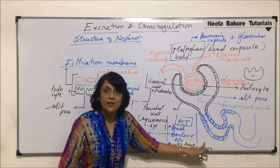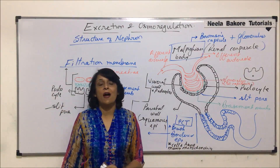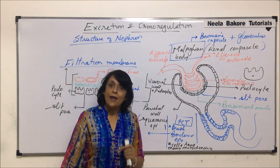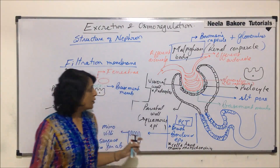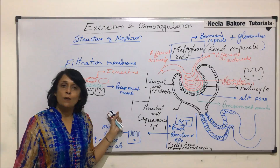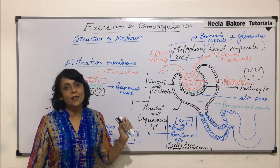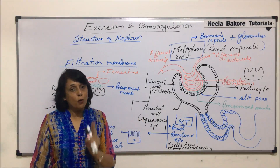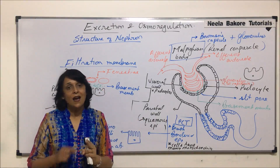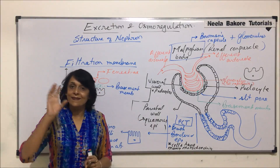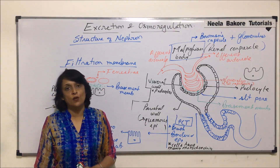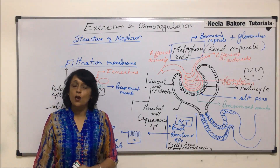After PCT, the next part is the loop of Henle. In the next segment we will talk about Henle's loop — both the arms, that is descending and ascending — and then would come the distal convoluted tubule.